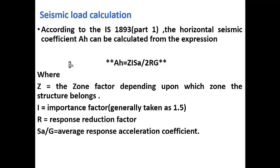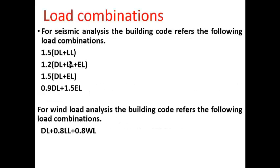Seismic load calculations. According to IS 1893 Part 1, the horizontal seismic coefficient AH can be calculated from the formula: AH = Z × I × SA / (2R × G), where Z is the zone factor, I is the importance factor, R is the response reduction factor, and SA/G is the average response acceleration coefficient. For seismic analysis, the building code refers the following load combinations: 1.5 × (dead load + live load), 1.5 × (dead load + earthquake load). For wind load analysis: dead load + 0.8 live load + 0.8 wind load.